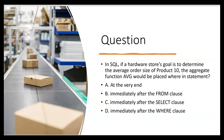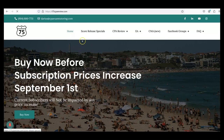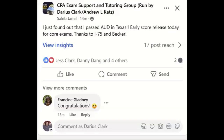Let's try this: 'If a hardware store's goal is to determine the average order size of product 10, the aggregate function AVG would be placed where in the statement?' If you think you know, leave the answer in the comments. Remember to like and subscribe so you'll be notified when another video drops. For more help with SQL or any part of the CPA ISC exam, go to i75cpareview.com — get yourself on i-75 with me, Darius Clark.